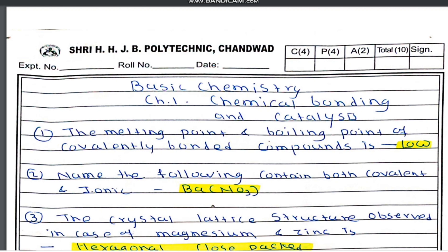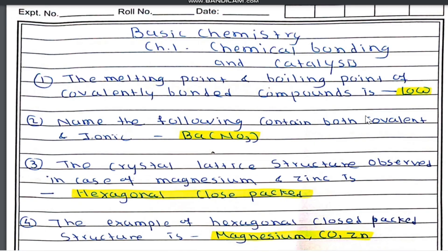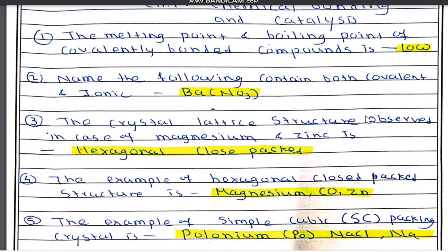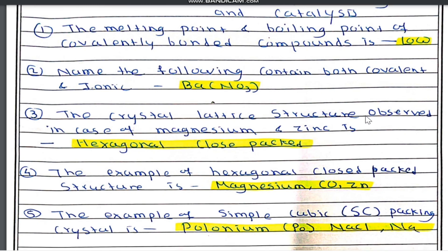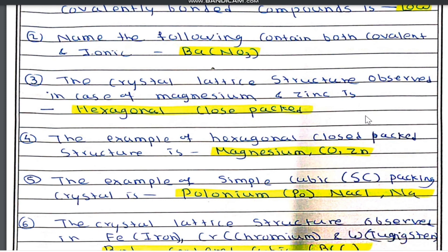The second question: name the compound that contains both covalent and ionic bonds. It is barium nitrate, which contains both types of bonds. The crystal lattice structure observed in magnesium and zinc is hexagonal close-packed structure, or HCP. The examples of HCP are magnesium and zinc.